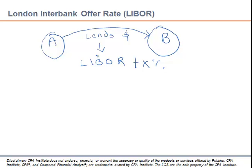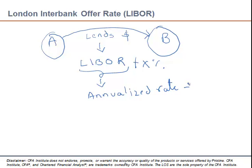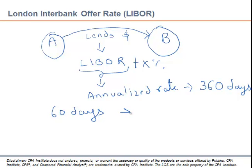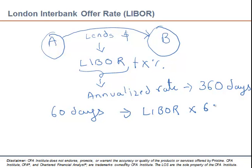LIBOR is the reference rate used to quote interest rates on dollar denominated loans. It is always stated as an annualized rate, and it is annualized using a 360-day year. So if a particular loan is for 60 days, we convert the annualized LIBOR rate for the appropriate time period: LIBOR multiplied by 60 divided by 360, which gives the interest rate for those 60 days.